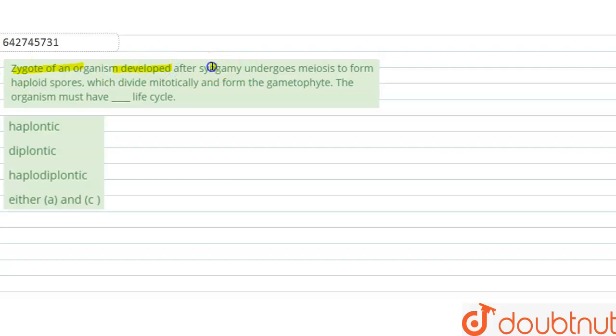The zygote of an organism developed after a zygote undergoes meiosis to form haploid spores which divide mitotically and form the gametophyte. The organism must have which life cycle? The examples are haplontic, diplontic, haplodiplontic, either A and C.